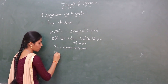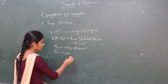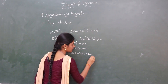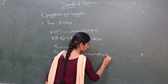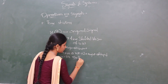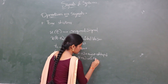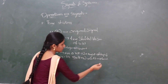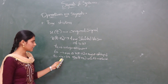If t0 is positive, then x of t becomes x of t minus t0, and the signal is shifted towards the right — this is known as a delayed signal. If t0 is negative, then the signal becomes x of t plus t0 and the signal is moved towards the left, which is known as the advanced version of the signal. In summary: if positive, right shifted; if negative, left shifted.